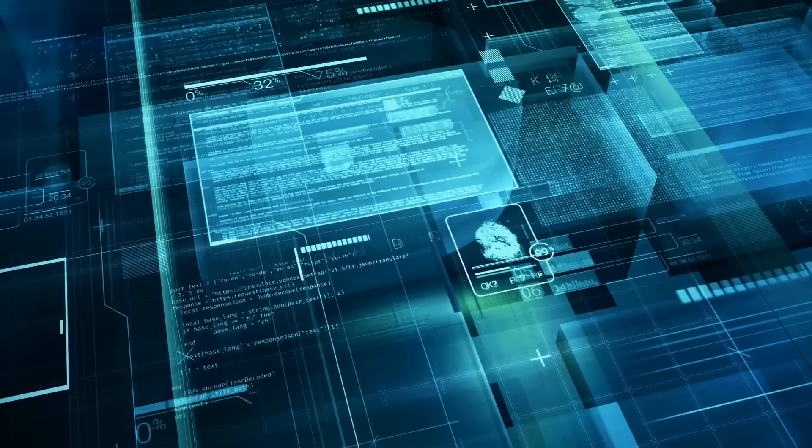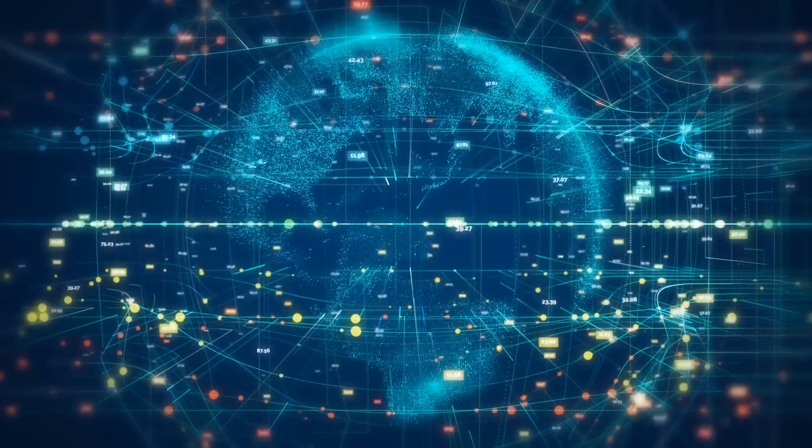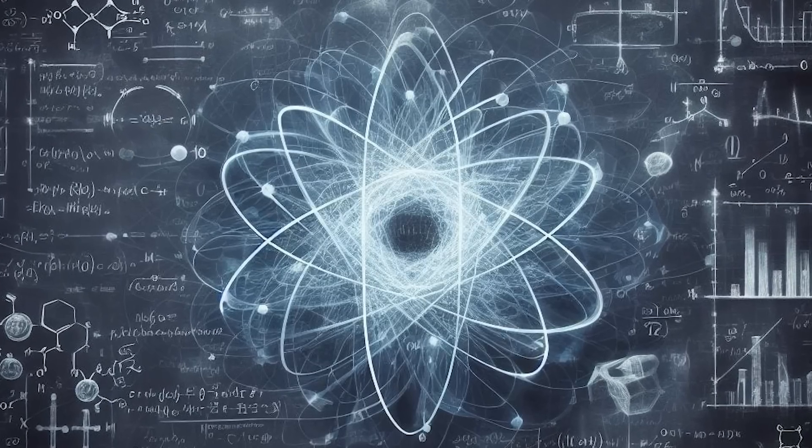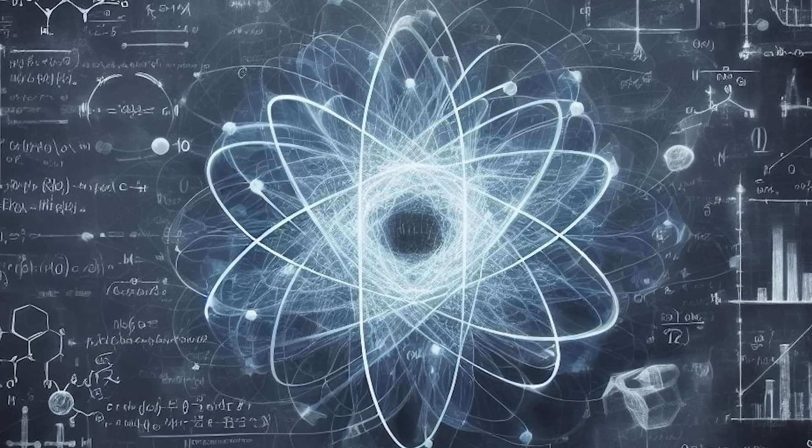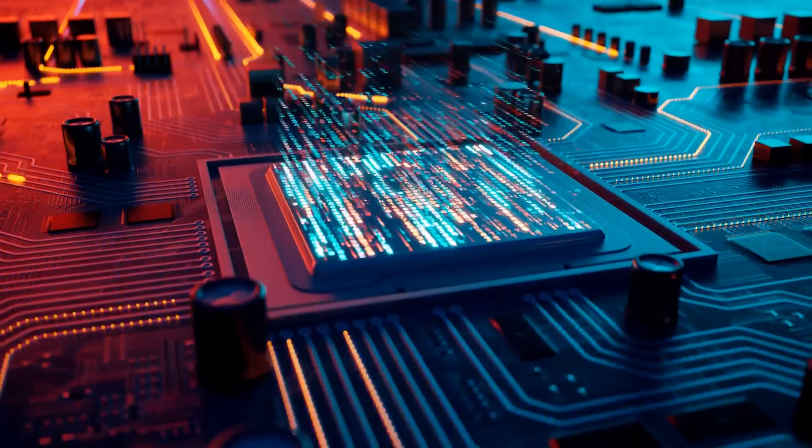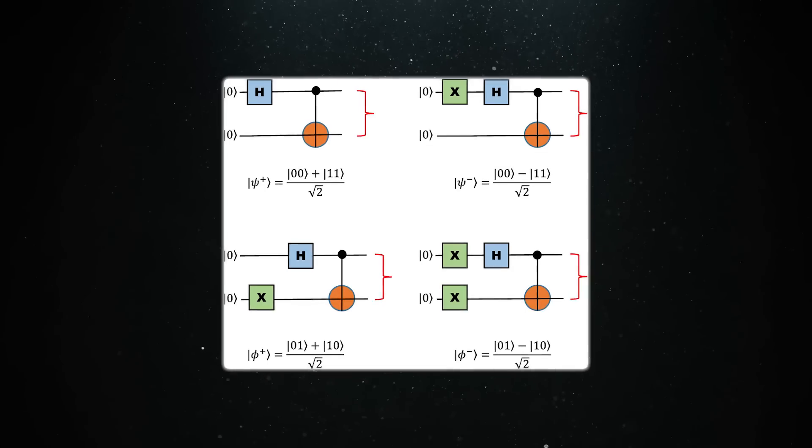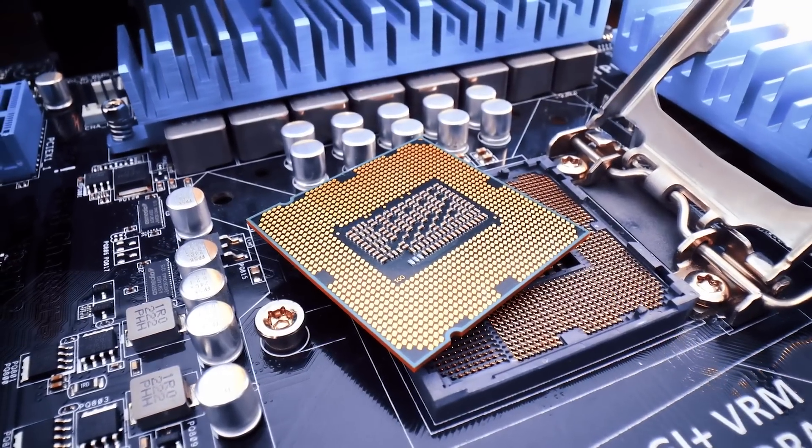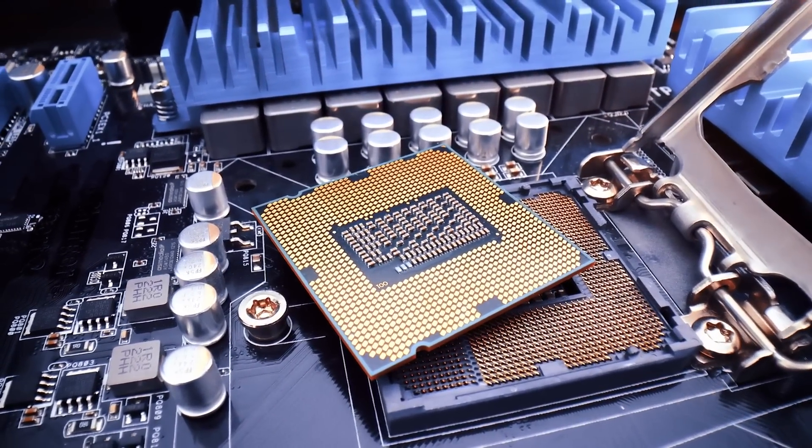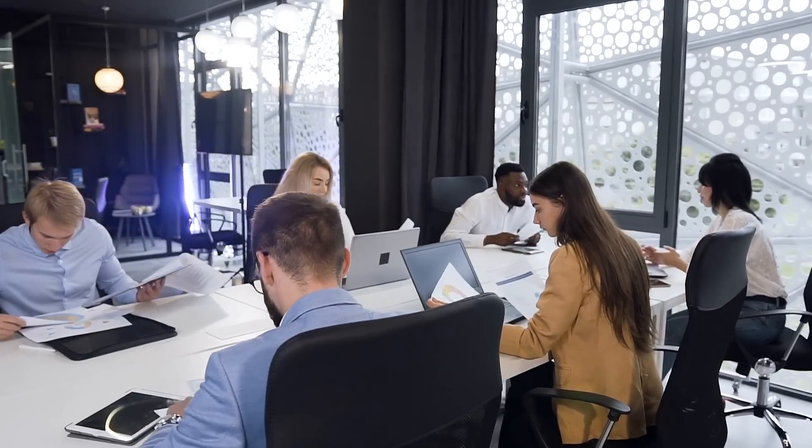The teams from Microsoft and Quantinuum took a big step forward in quantum computing by demonstrating something called entanglement of logical qubits. Entanglement is a special property in quantum physics where two or more qubits become connected in such a way that the state of one qubit can instantly affect the state of the other, no matter how far apart they are. This is a key feature that makes quantum computing so powerful compared to regular computers. What made this demonstration even more special was that they used a complex arrangement called a Greenberger-Horn-Zeilinger state. This is more intricate than the simpler entanglement method called a Bell state. The GHZ state involves multiple qubits being entangled at once, creating a more advanced and challenging setup.